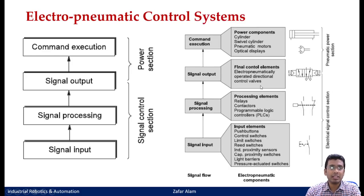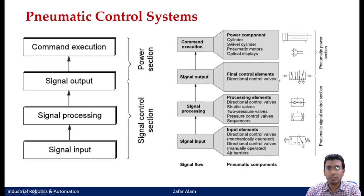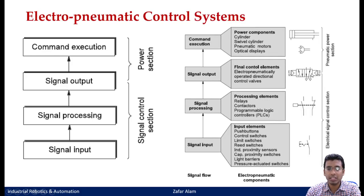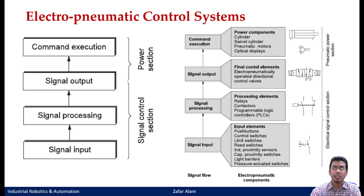Now compare this with an electro-pneumatic control. Even in the electro-pneumatic control, you will see a direction control valve, although in the earlier case it was a double pilot operated 5/2 DCV. In this case, it is a 5/2 DCV but it is a solenoid valve. All signals coming from the electro-pneumatic control system are electrical signals, which are processed and the output is an electrical signal that shifts the spool of the valve. The power section — cylinders and actuators — remains the same even in the electro-pneumatic section.